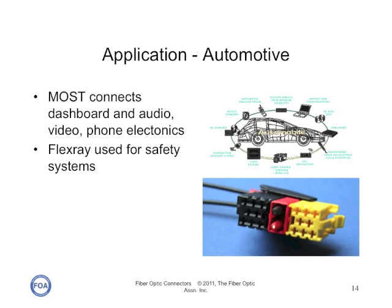Plastic fiber is used in lots of automobiles too. There are two types of typical systems. Most connects the dashboard and the audio, video, and phone electronics in the car, creating a ring-type network using the connector shown here, which combines optical and electrical contacts. FlexRay is used for safety systems like airbags.